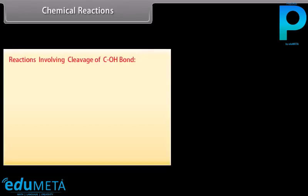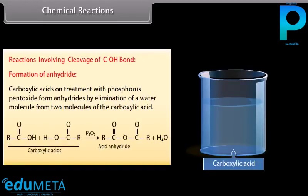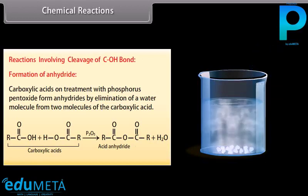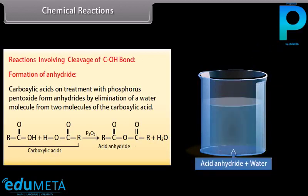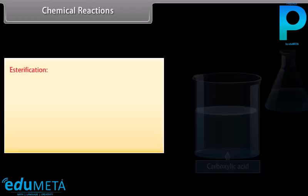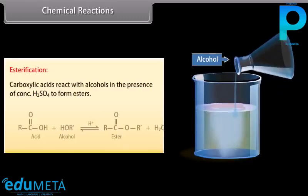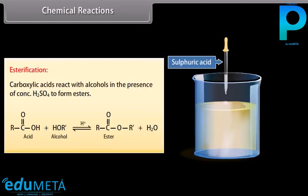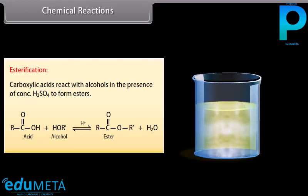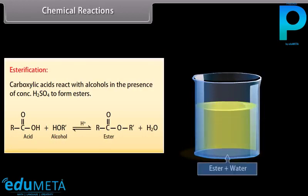Reactions involving cleavage of C-OH bond. Formation of anhydride: carboxylic acids on treatment with phosphorus pentoxide form anhydrides by elimination of a water molecule from two molecules of the carboxylic acid. Esterification: carboxylic acids react with alcohols in the presence of concentrated sulfuric acid to form esters.